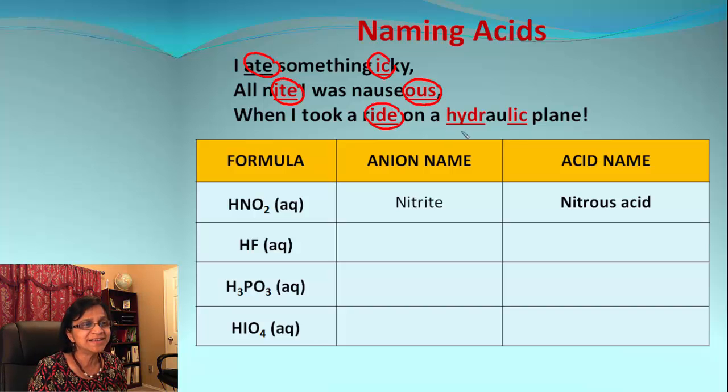Let's take the example. The first one is HNO2. Obviously NO2 is the negative anion, and NO2 stands for nitrite. Look at the last part: nitrite, all night I was nauseous. So the acid should be ending with -ous, and that's why we added that. So it becomes nitrous acid.